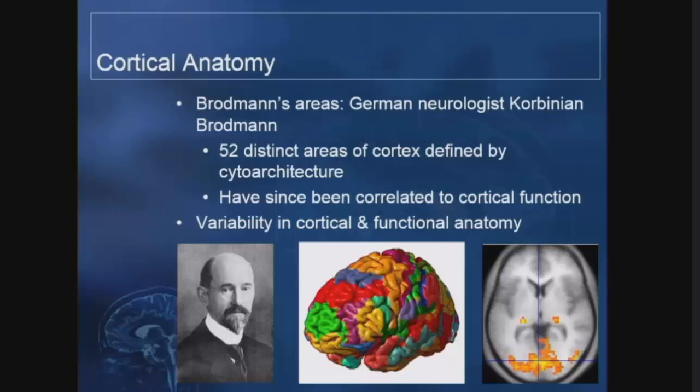Brodmann actually went through and came up with 52 areas of the brain based on function — done before functional imaging, using cytoarchitecture, and it has pretty much held up to functional imaging. I'm not going to go through all 52 Brodmann areas. Instead I'll go over the anatomic aspects, but keep in mind that not everyone's brain is quite the same — there is variability, including for functional areas, which will vary in size from person to person and depending on age.